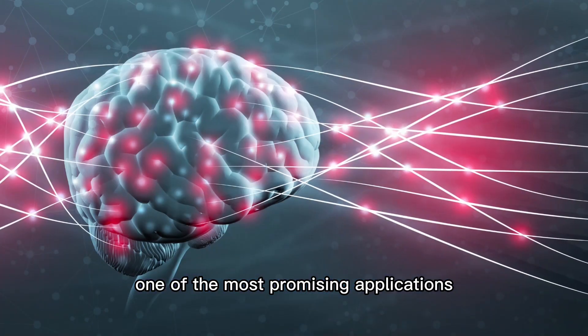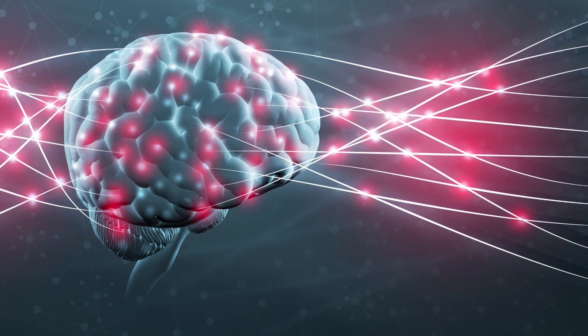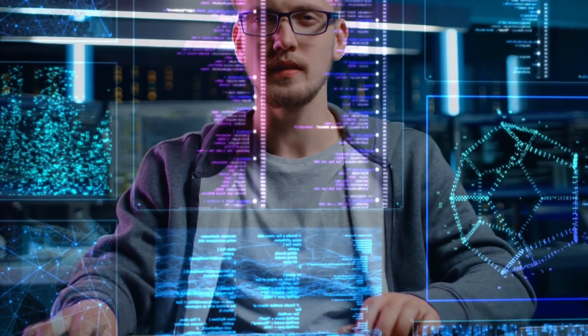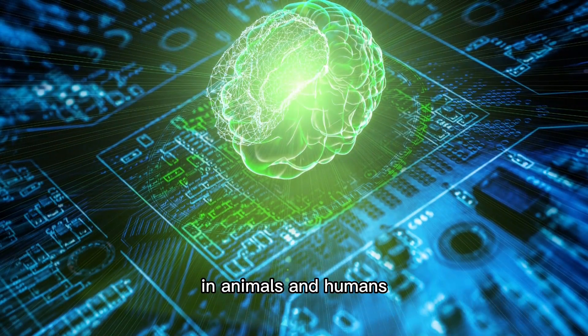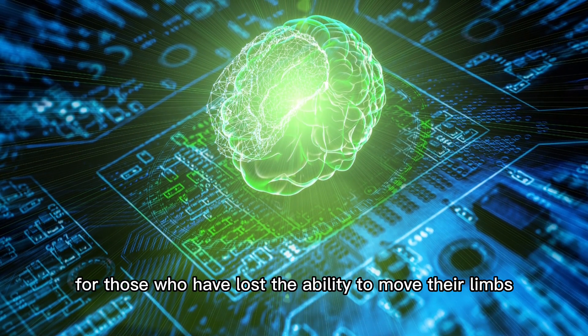One of the most promising applications of neural implants is in the field of prosthetics. By implanting a neural device into the brain, people with paralysis can control prosthetic limbs using their thoughts. This technology has already been tested successfully in animals and humans and is providing hope for those who have lost the ability to move their limbs.